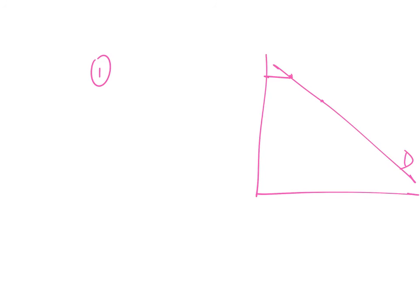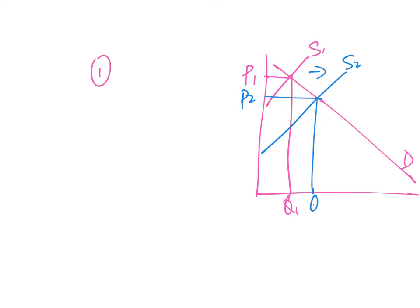To get full marks, first draw a diagram with elastic demand. Draw S1 with P1 and Q1. Because supply increases, draw S2 to get the second equilibrium at P2 and Q2 — price decreases, quantity increases. Remember to mark the plus and minus areas to show gain over loss. The gain area is larger than the loss area, so total revenue increases.